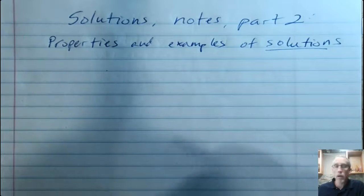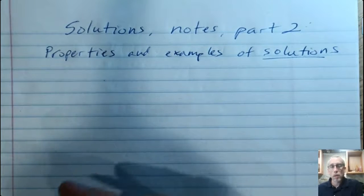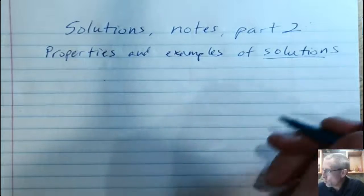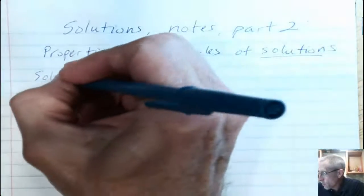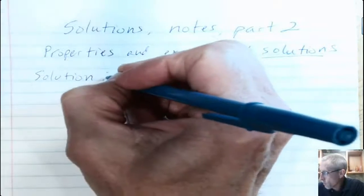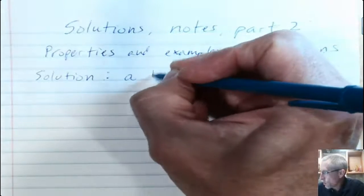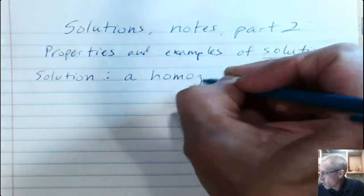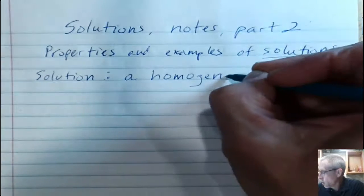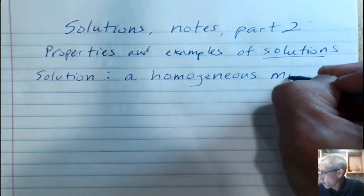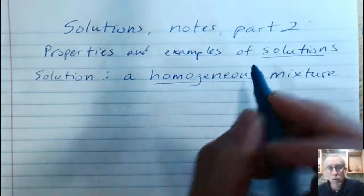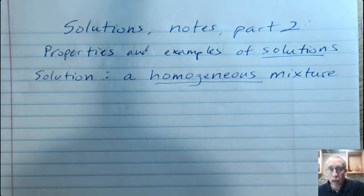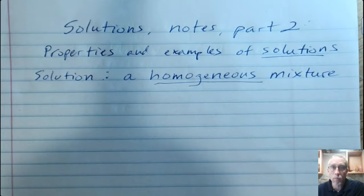I'm going to really use that as a definition for what a solution is. So maybe you can get this down just below where you drew the diagram for part one. The solution is a homogeneous mixture. Just to remind you what that means, when you look at it, you're not going to be able to tell that it's a mixture of different things. It all looks like the same stuff.